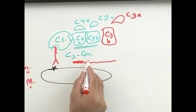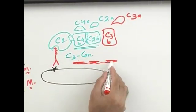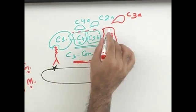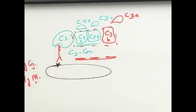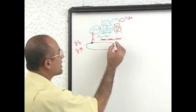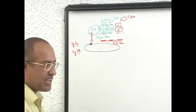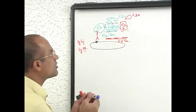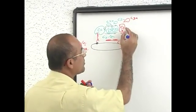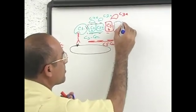This complex which includes C4b plus C2b plus C3b, all three together, what are they called? C5 convertase. C5 convertase binds with and will activate which product? C5.